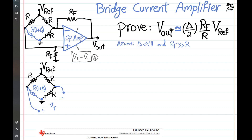Going back to the Thevenin equivalent, I want to find V-Thevenin by keeping these terminals open and finding the voltage between the two nodes. On the right branch, V-ref is divided between R and R, so the voltage is simply V-ref divided by 2, or 0.5·V-ref.